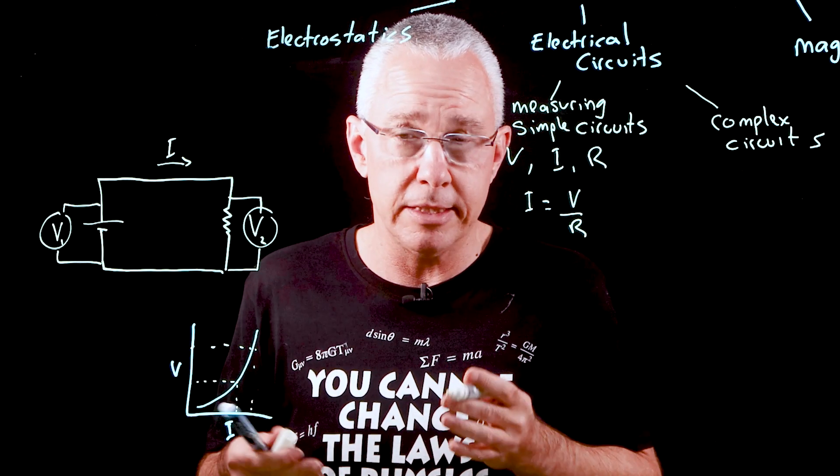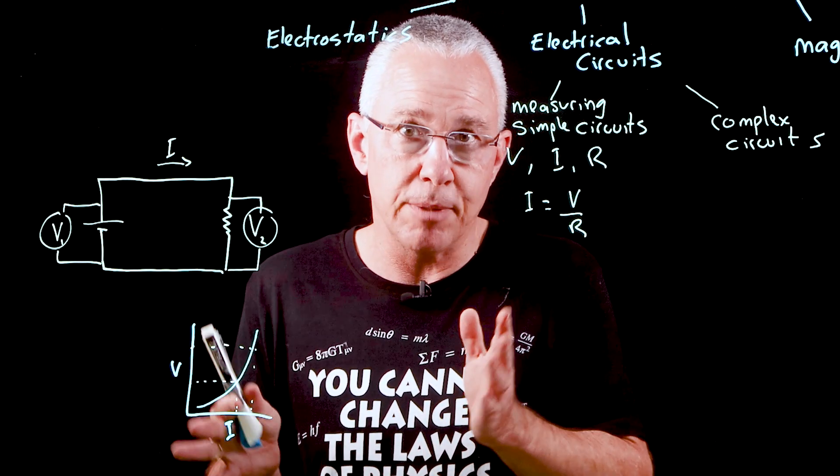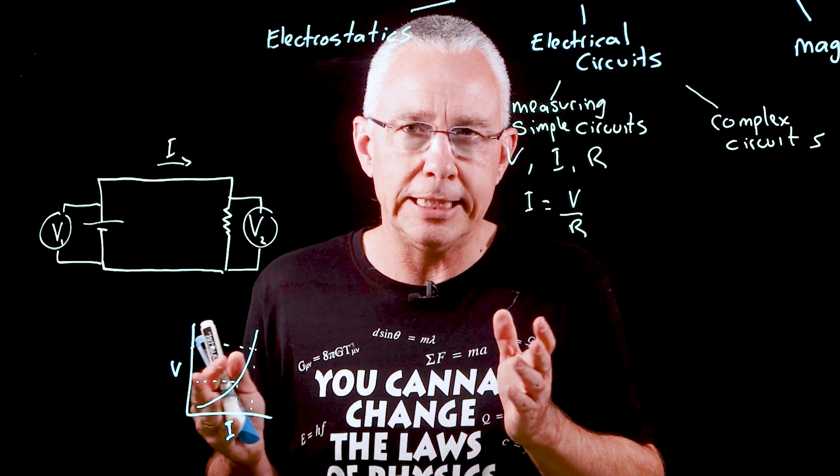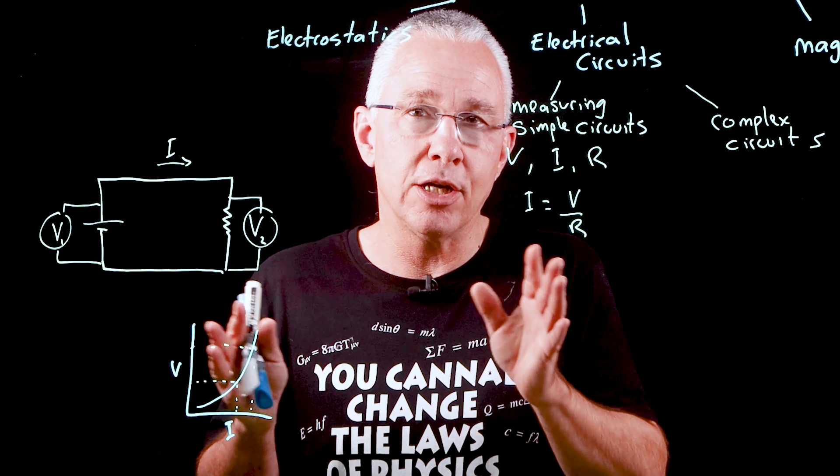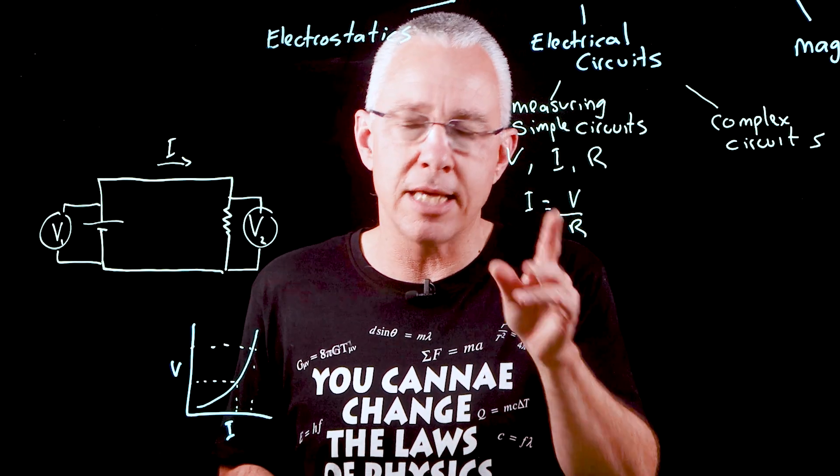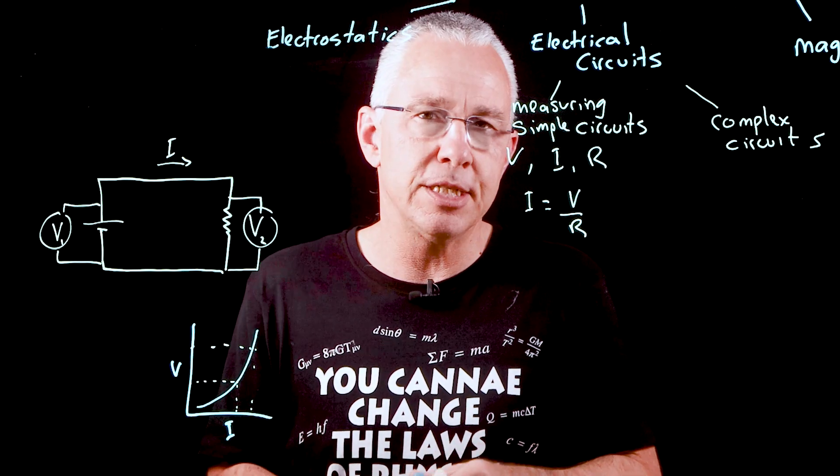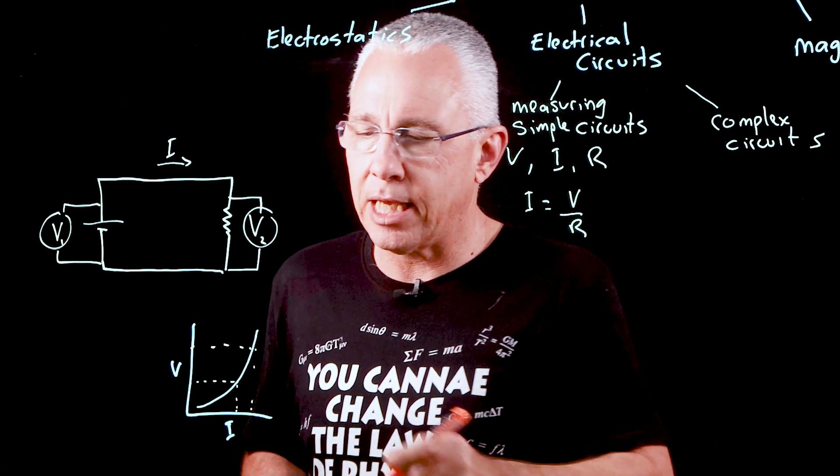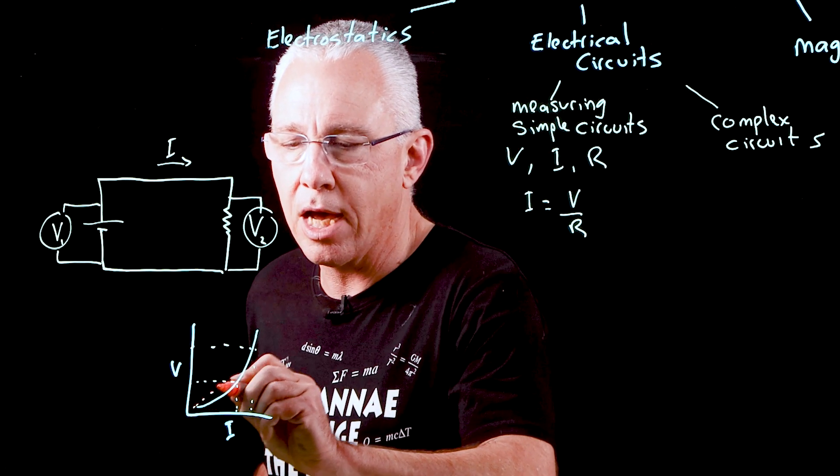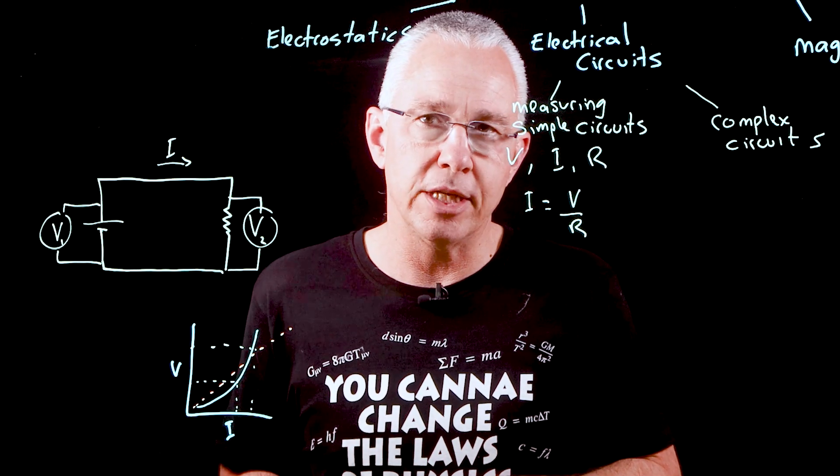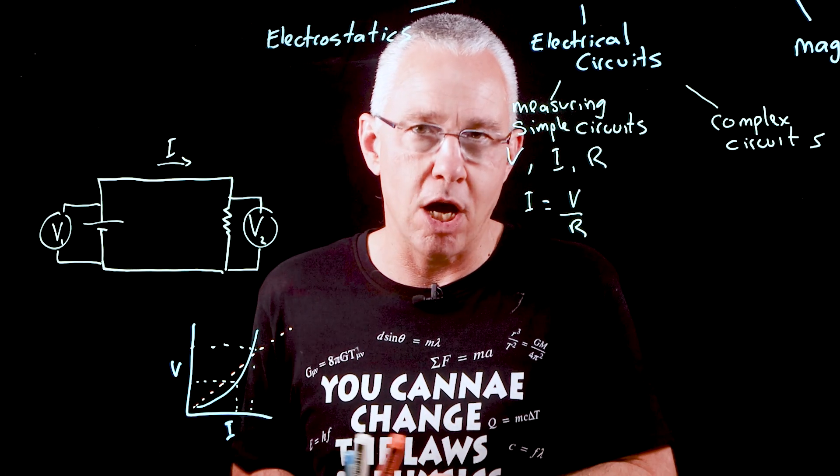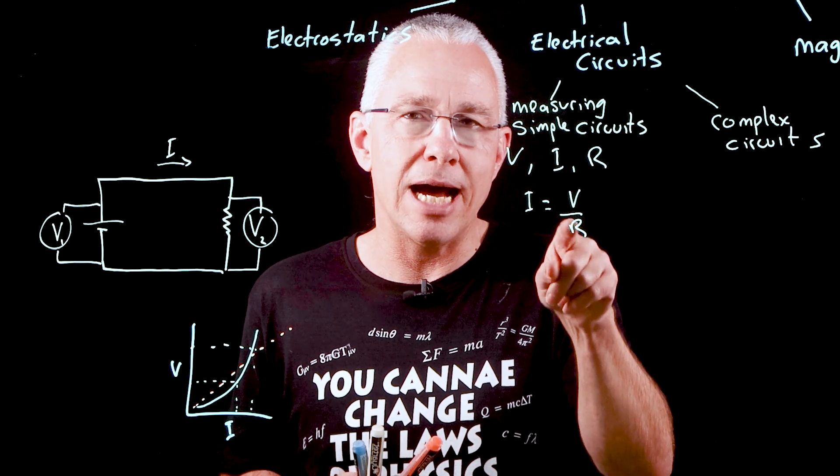Ohm's law goes a step further—it says that in some circuits with some resistors we get a linear line, and the resistance is constant regardless of the voltage and current. That is actually Ohm's law, which says that R is constant for all situations. This highlights that we can have ohmic resistors that remain constant through a large range.